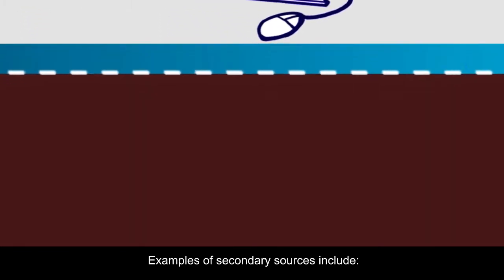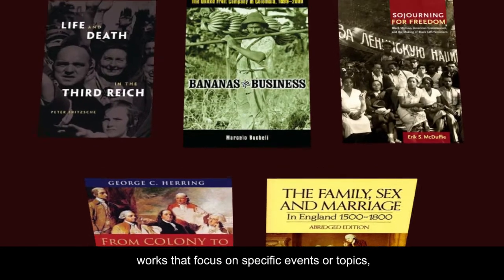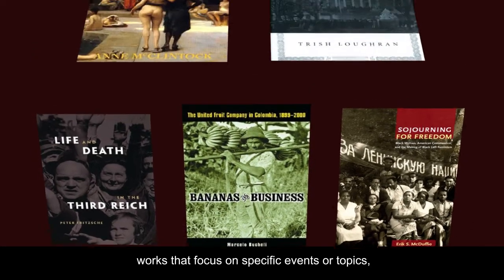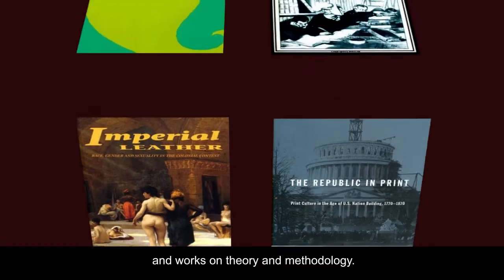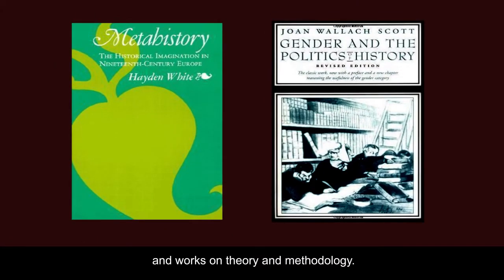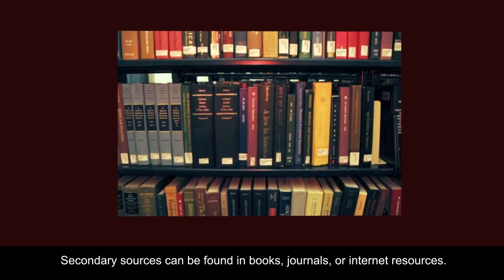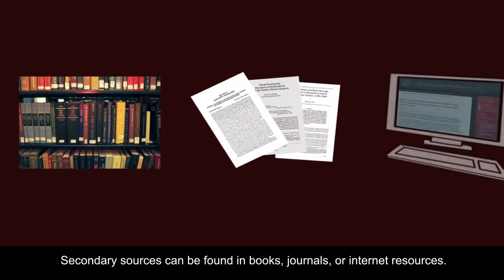Examples of secondary sources include surveys of broad historical periods, works that focus on specific events or topics, literary and cultural criticism, and works on theory and methodology. Secondary sources can be found in books, journals, or internet resources.